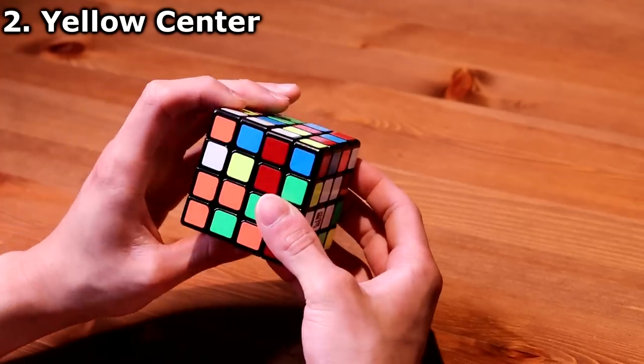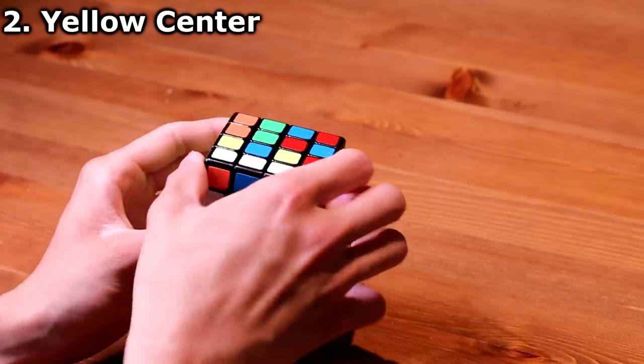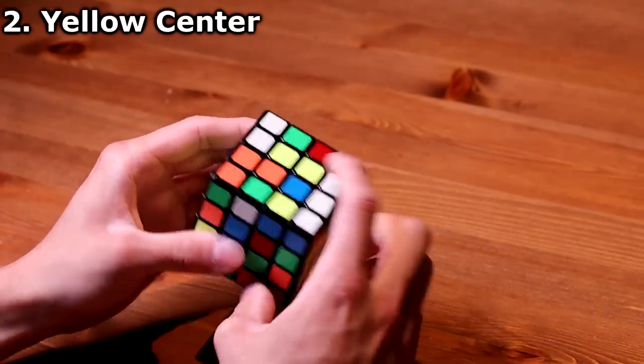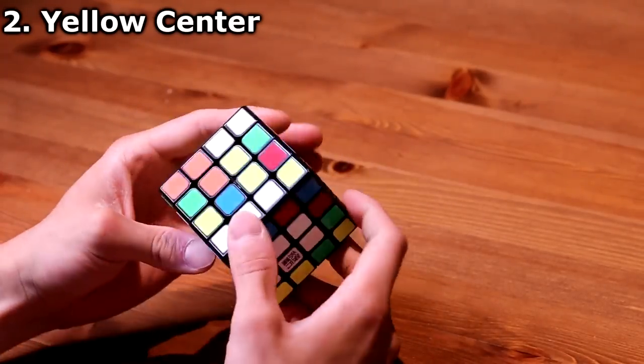if I turn it like that, it won't match up. So I move one of them like so, and then turn the left side up so that the 2x1 yellow block is made. The white is still intact.